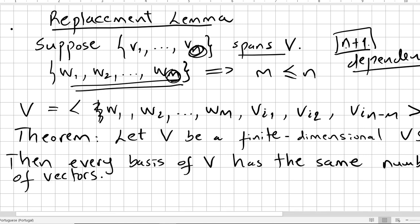So connected with this Replacement Lemma, we have this very simple theorem that says: let V be a finite dimensional vector space. So if we are not talking about infinite dimensions, we are not in functional analysis here. Let V be a finite dimensional vector space, then every basis of V has the same number of vectors. So if you have a basis for a given finite dimensional space, any other basis has to have the same number of vectors. This is a basic result from linear algebra, so I'm not going to produce any proof.